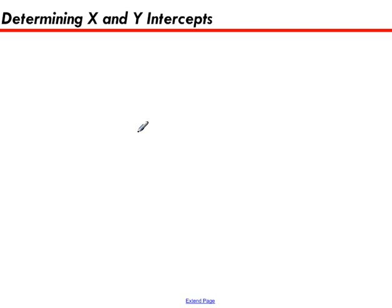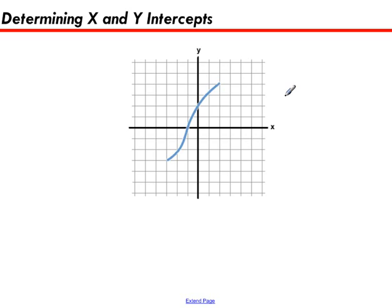But before we do that, let's figure out what we mean by the term x and y intercepts by taking a look at some random squiggly shape on a graph. So you'll see I've gone ahead and shown you a squiggly blue line that crosses the x and y axis.